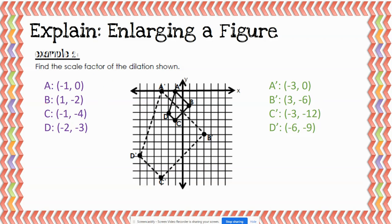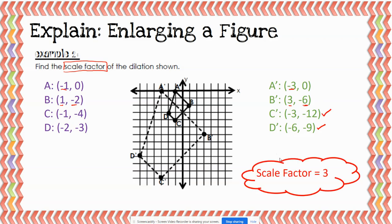Now I need to use those coordinates to find the scale factor. I ask myself: negative one changed to negative three — what would I multiply negative one by to get negative three? And one times three is three, and negative two times three is negative six. So it looks like the scale factor is three. Checking: negative two times three is negative six, negative three times three is negative nine — that's where D prime is. And negative one times three is negative three, negative four times three is negative twelve — that's where C prime is. So the scale factor is three.